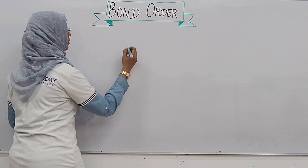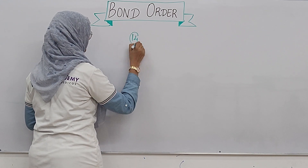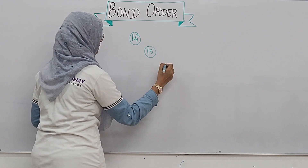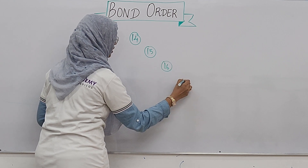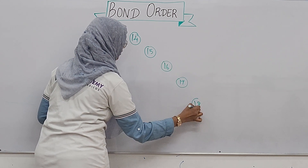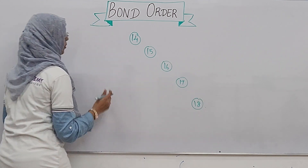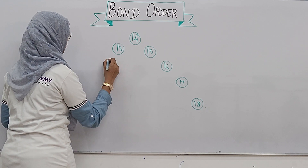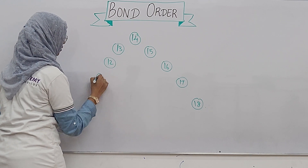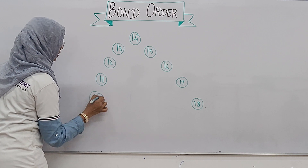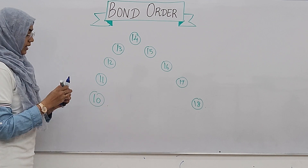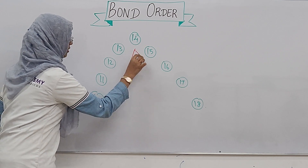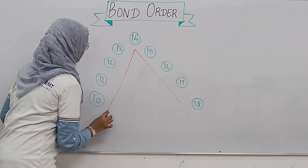First, we have a triangle. The numbers go from 14 up: 14, 15, 16, 17, 18, and then coming down from 14: 13, 12, 11, 10. So we use this triangle to calculate the bond order.